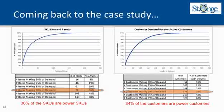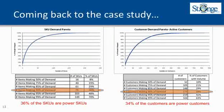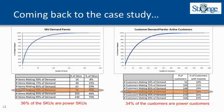Coming back to the case study, we'll concentrate on 90% of the demand. About 36% of the SKUs form 90% of the demand and 34% of the customers form 90% of the demand. I'll call 36% of the SKUs 'power SKUs' because they have the gravity to define the revenue stream, and 34% of customers as 'power customers' since they tend to drive the revenue stream as well.